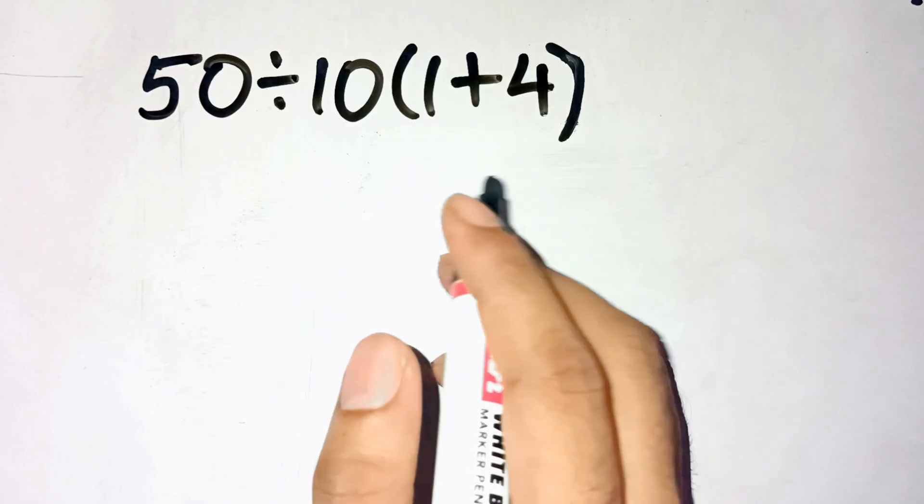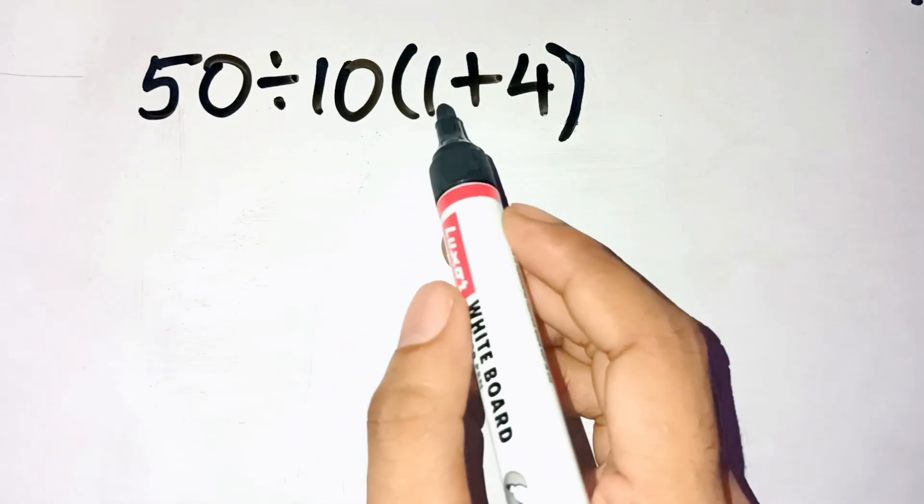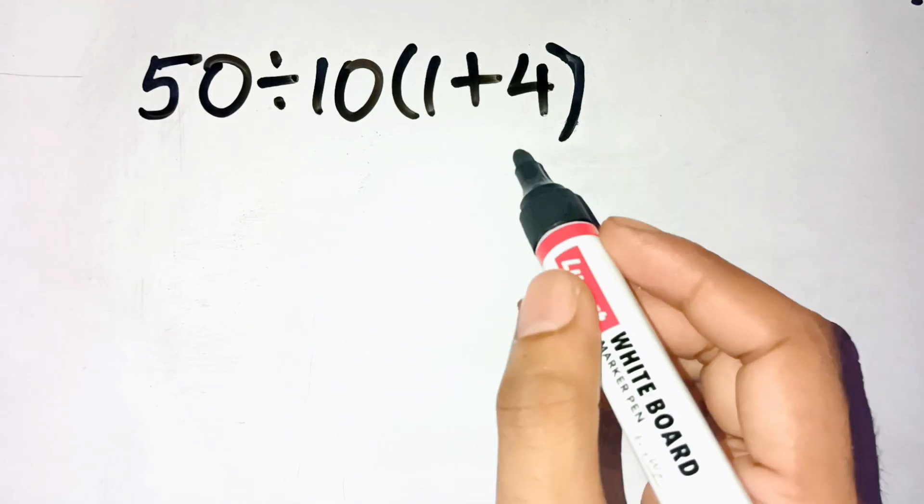So now, let's come to the point. Alright, the problem is 50 divided by 10, open parenthesis, 1 plus 4, close parenthesis.